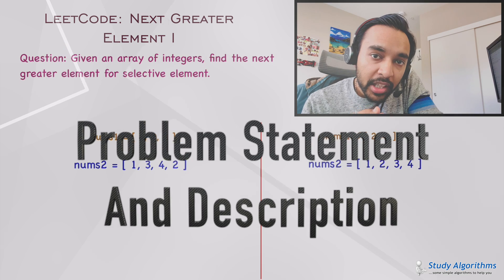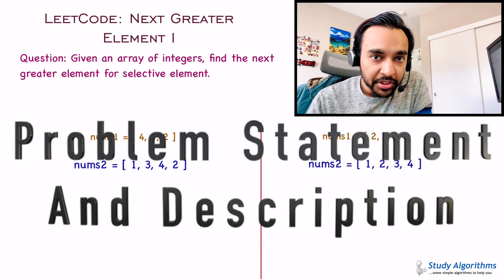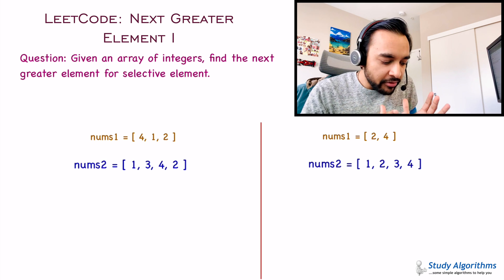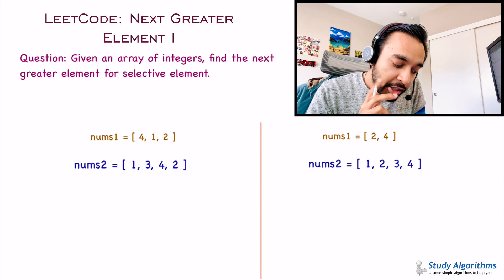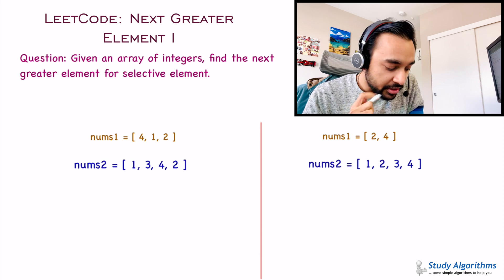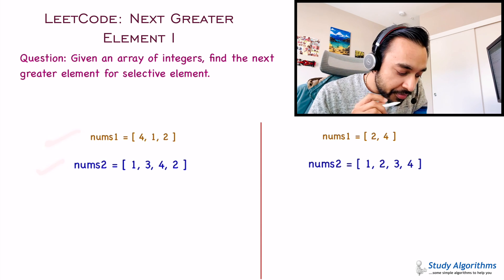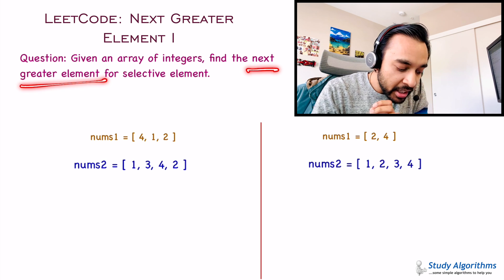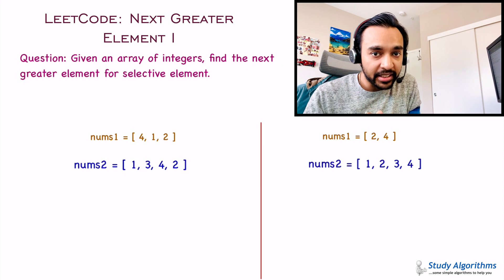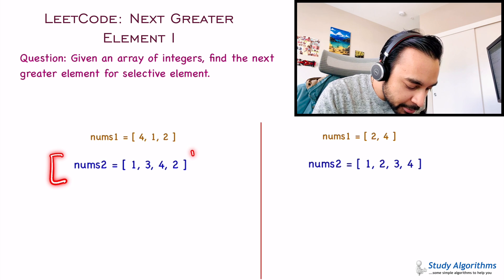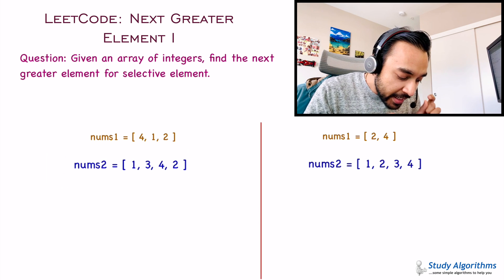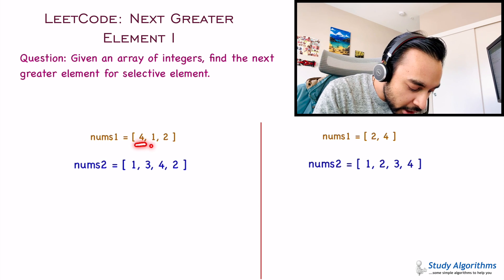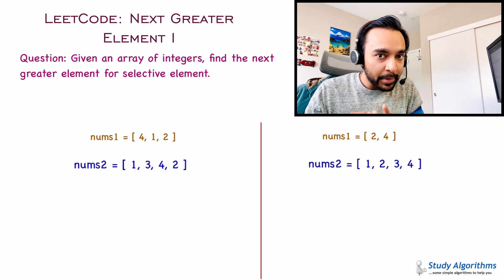Let us first make sure we are understanding the problem statement correctly. I know this problem is very verbose, so I have simplified it for you. You are given two arrays of integers — nums1 and nums2 — and you have to find the next greater element for some selective elements. For example, I have this array nums2, and I need to find the next greater element for element 4, element 1, and element 2.